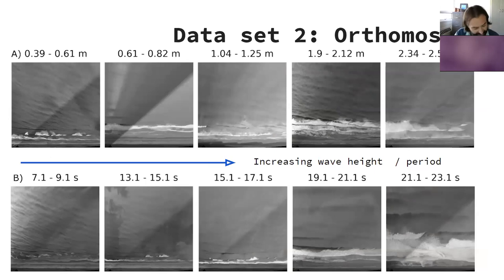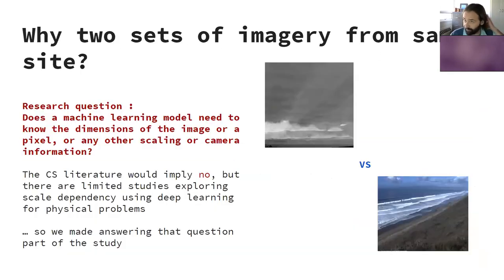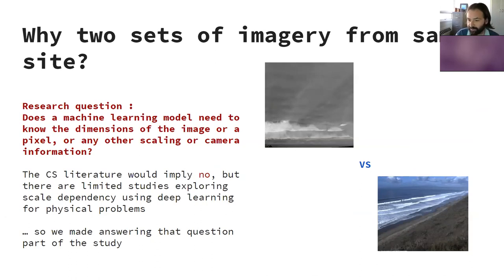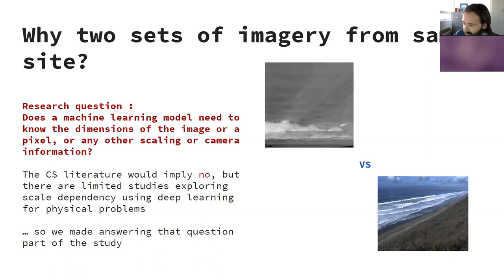There is a diagnostic texture in these images that we're hoping the computer can exploit. But why compare two sets of imagery from the same site? That goes back to the question of whether the machine learning model really needs to know the physical dimensions of the pixel or image, or whether those dimensions need to be consistent. The computer science literature would imply no, but there are very few studies at this point applying deep learning in this sort of natural system context, so we made answering that question part of the study.